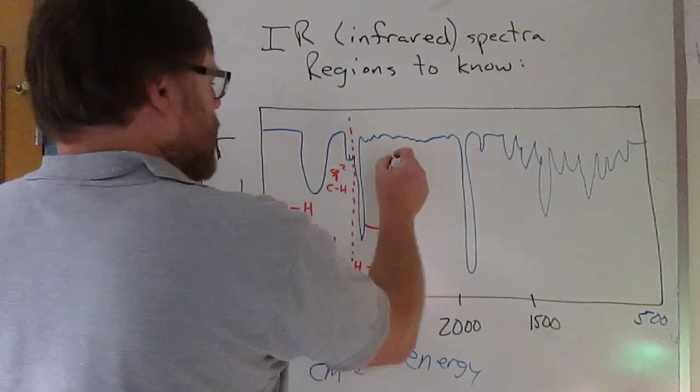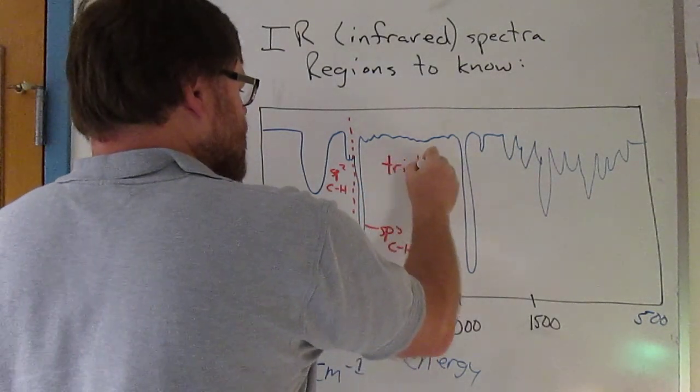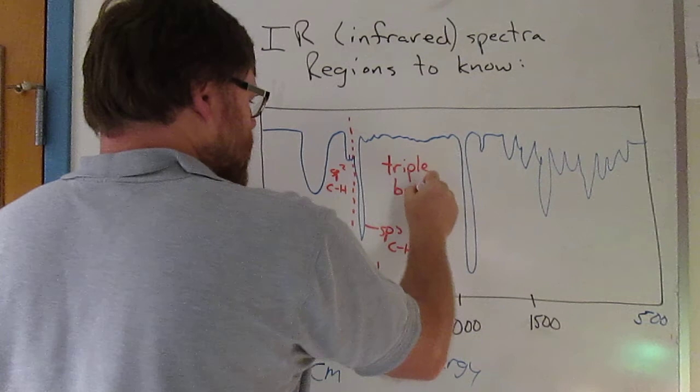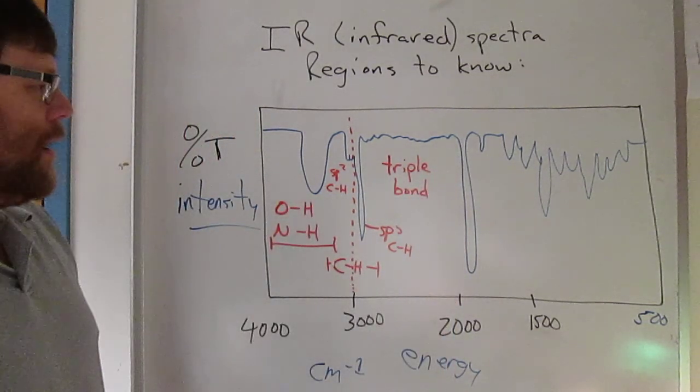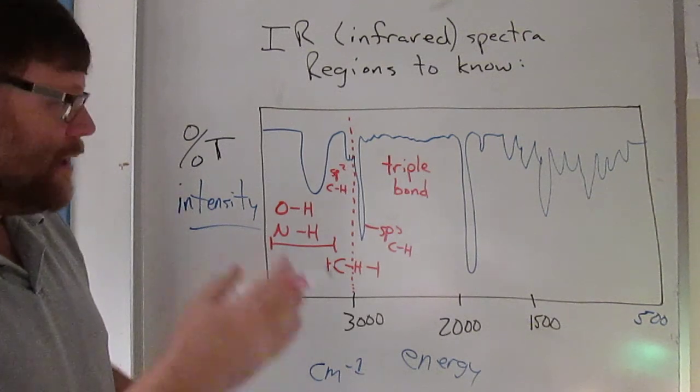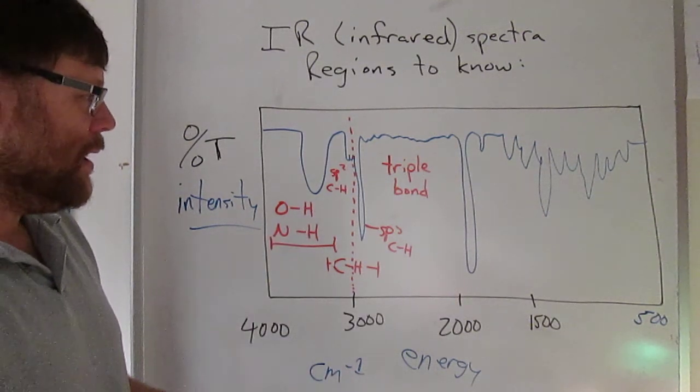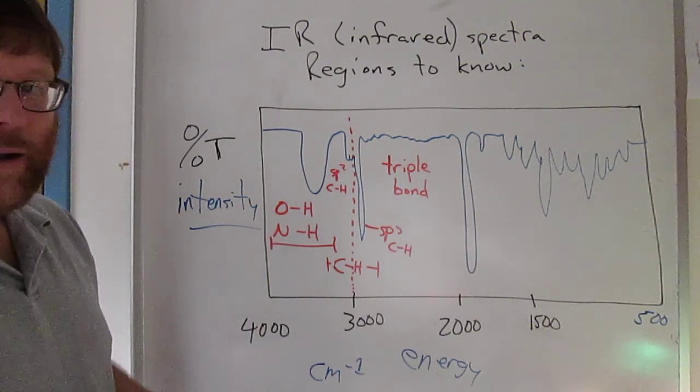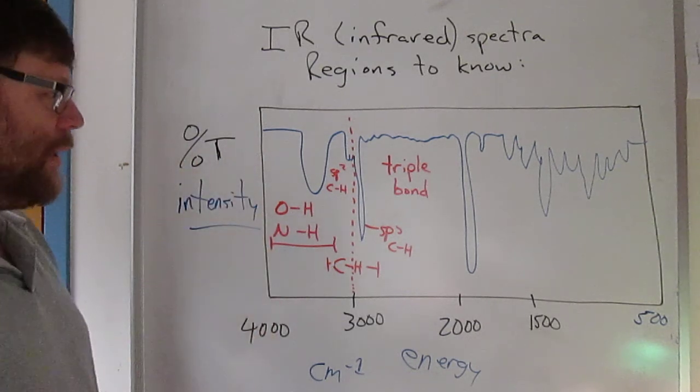You have a pretty big region in here that will usually be vacant, where you'll find triple bond stretches. So carbon-nitrogen triple bonds tend to show up fairly intensely. And then carbon-carbon triple bonds are less intense, but also in that region.